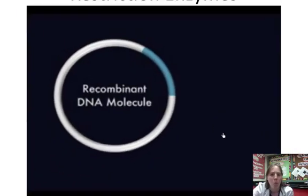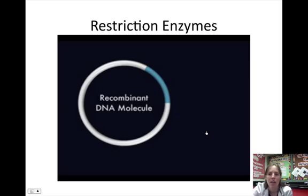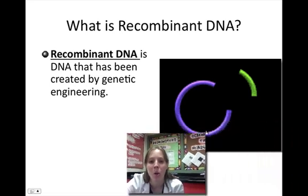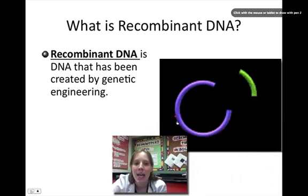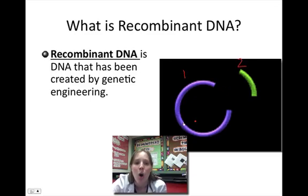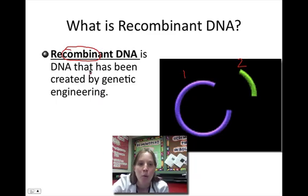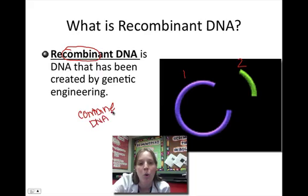So we're going to talk a little bit about what we call this new DNA. This new DNA that has DNA from two different living things is called recombinant DNA. If I look inside of this word recombinant, I see this root that looks a little bit like the word combine. And that makes sense because recombinant DNA is combining DNA from two organisms.